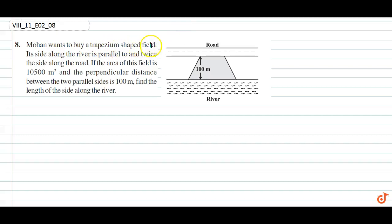Mohan wants to buy a trapezium-shaped field. Its side along the river is parallel to and twice the side along the road. If the area of this field is 10,500 square meters and the perpendicular distance between the two parallel sides is 100 meters, find the length of the side along the river.